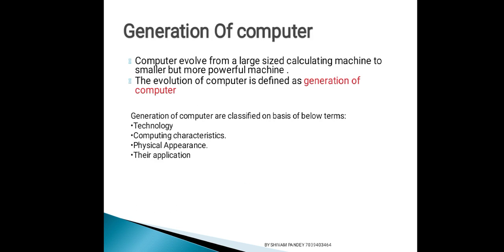जैसे-जैसे समय के साथ computer बढ़ा, वैसे-वैसे computer और advance होते गए — इसी चीज़ को हम कहते हैं generation of computer. Generation of computer means computer evolved from large-size calculating machines into smaller but more powerful machines. पहले computer बहुत बड़े होते थे, एक-एक कमरे में fit होते थे, धीरे-धीरे समय के साथ आज computer portable हो गए हैं, laptop हो गए हैं, उससे भी smart phones आ रहे हैं।